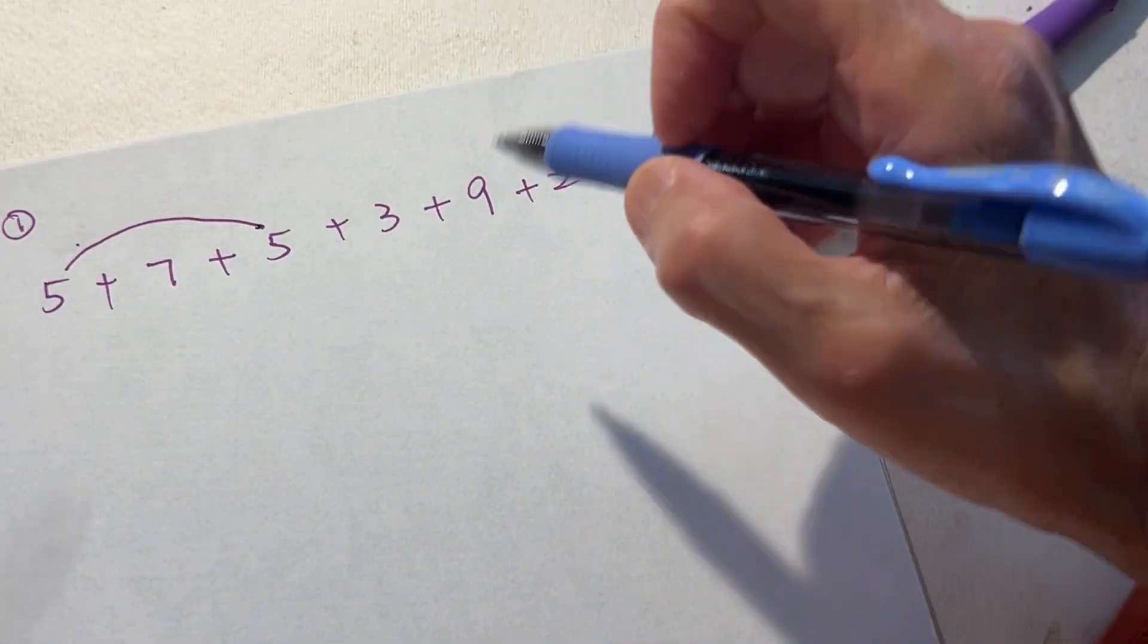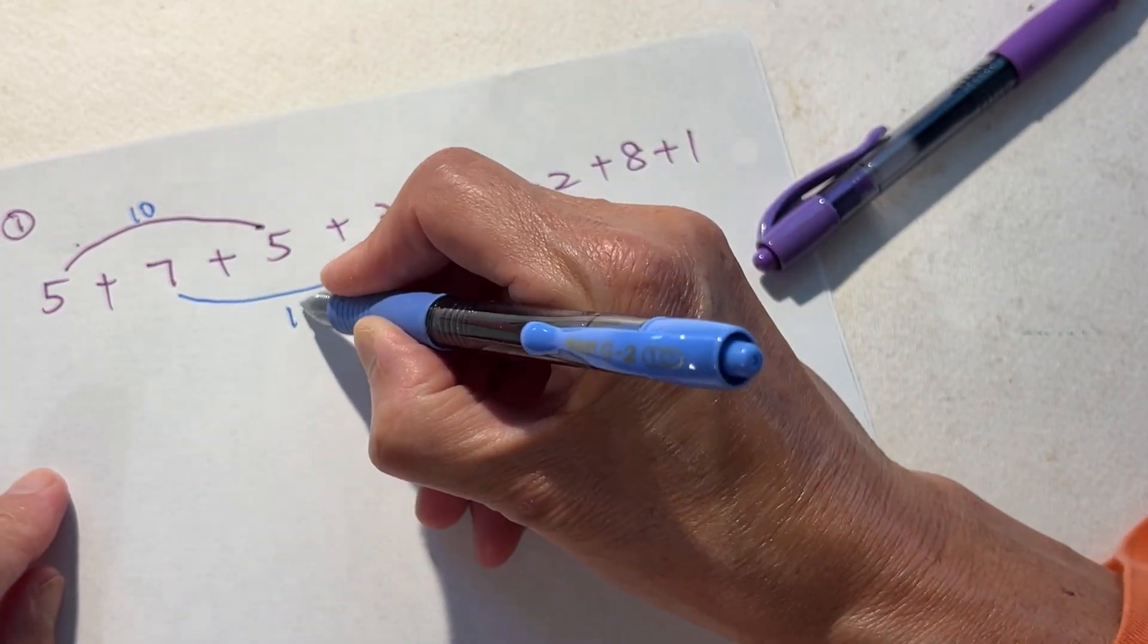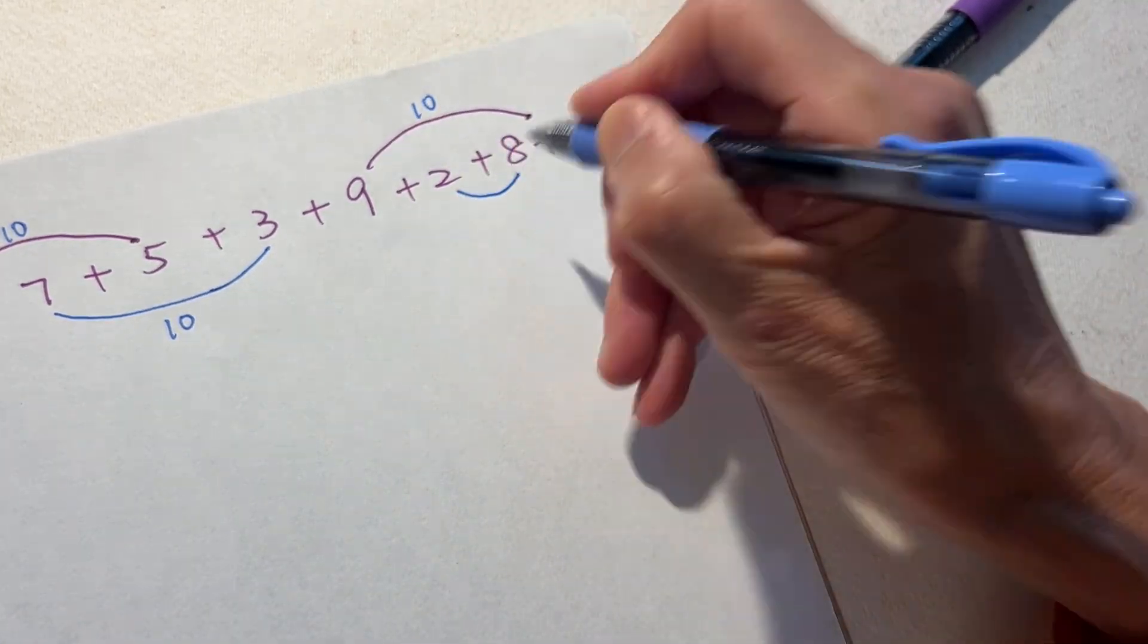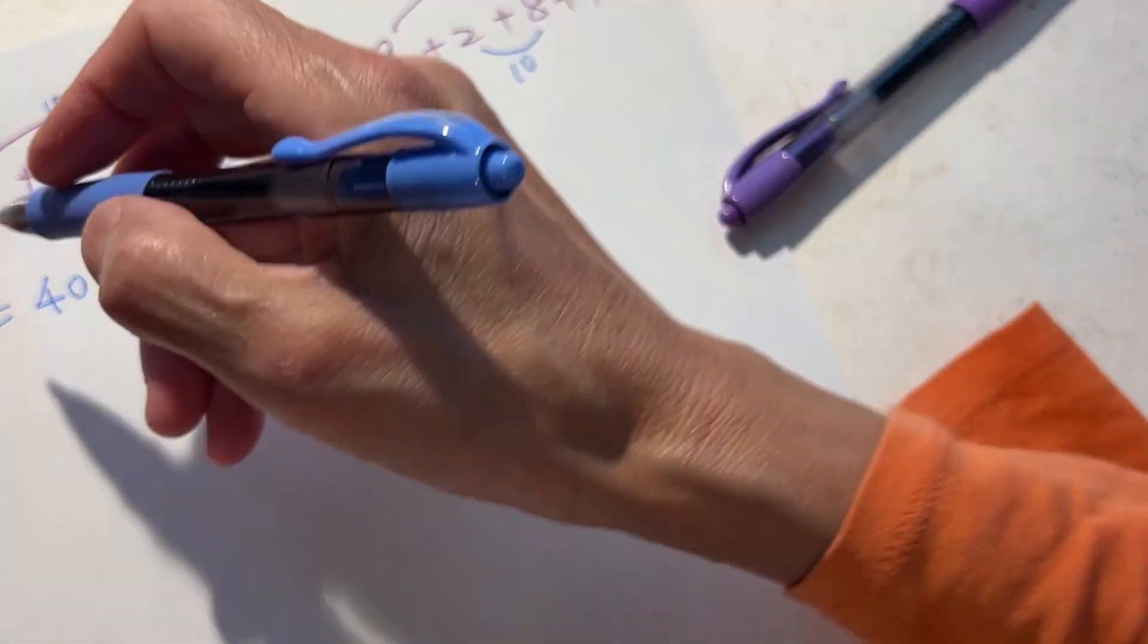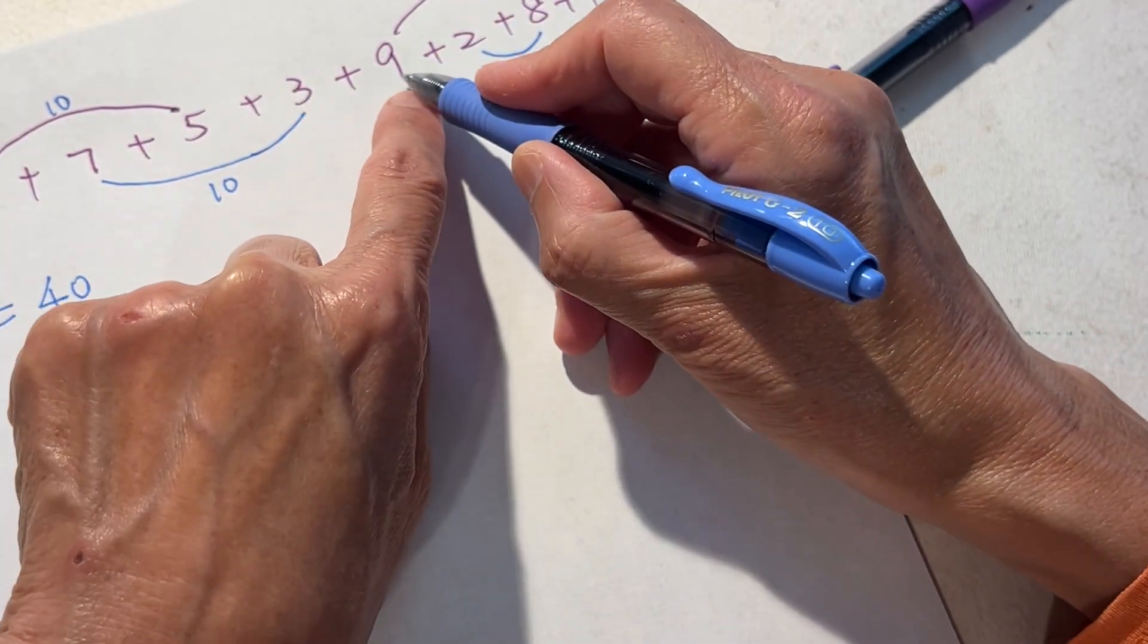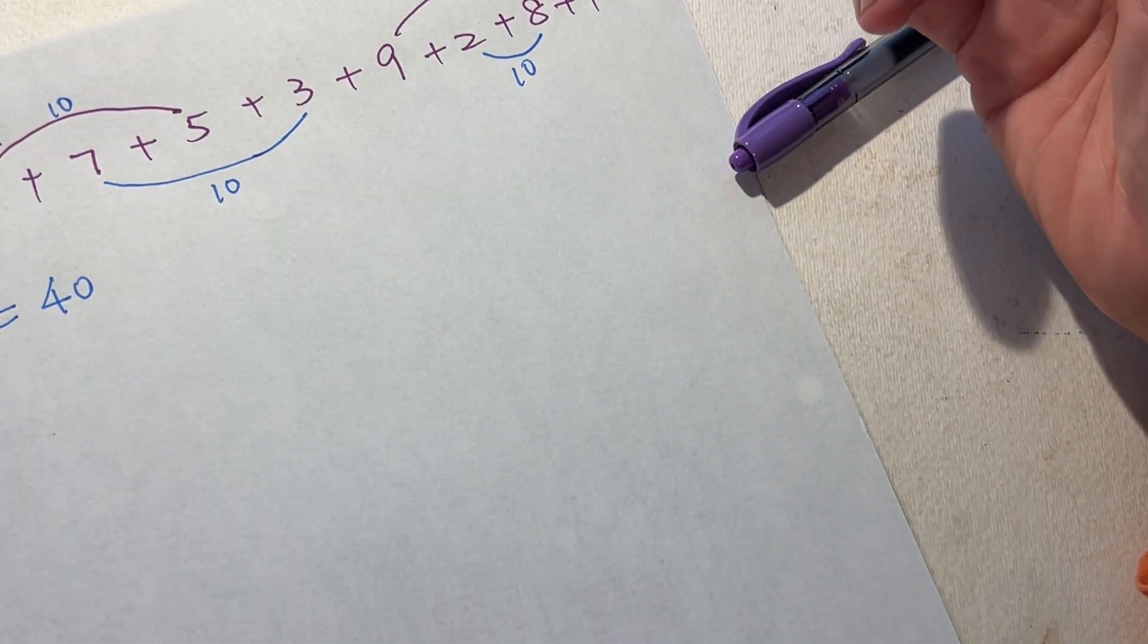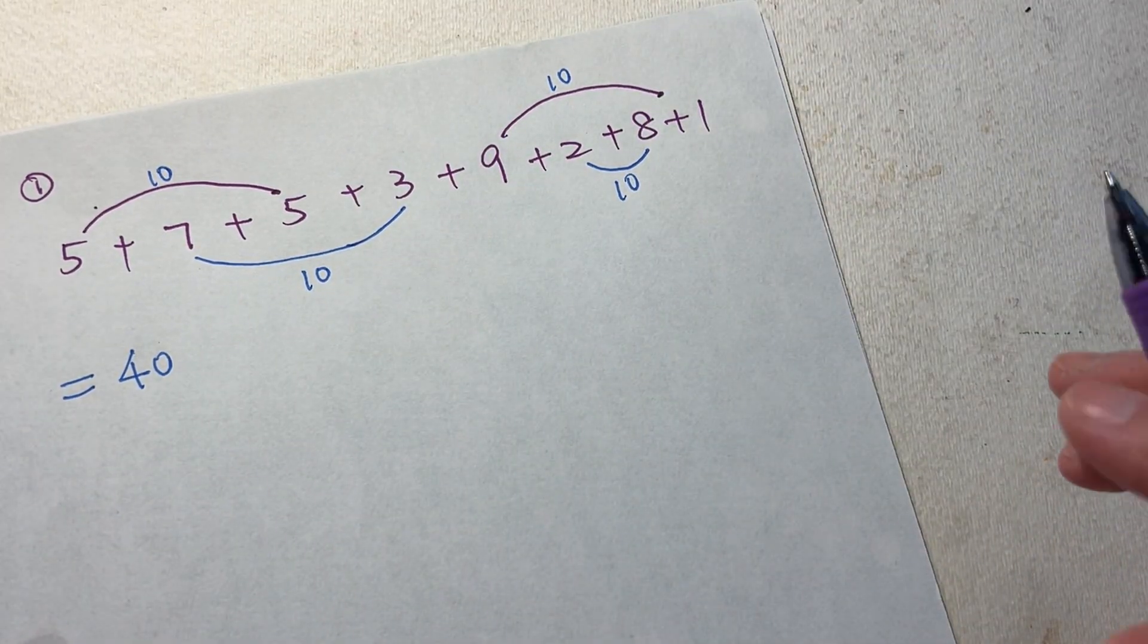Five and five makes ten, seven and three makes ten, nine and one makes ten, two and eight makes ten. So all together it's 40. It is better than 5, 12, 17, 20, 29, 31, 39, 40. At the end of the day you get the same result, but this way is cleaner and easier.